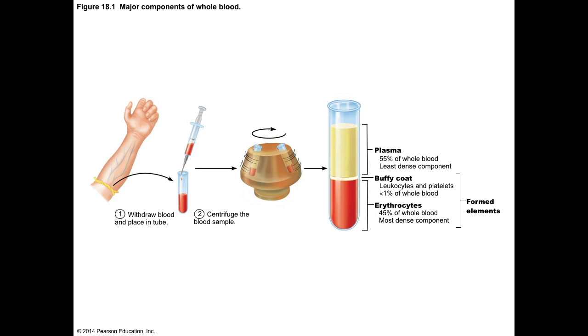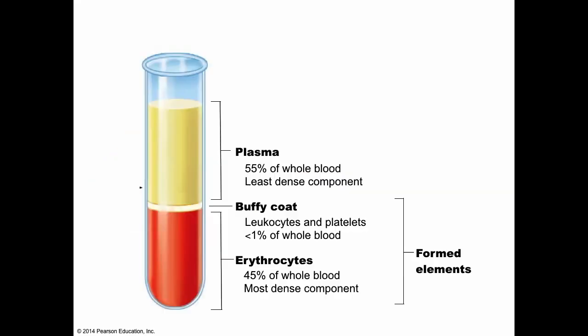Red blood cells, also called erythrocytes, make up almost half of the solid components, and their main function is to carry hemoglobin. Unlike nutrients that can be carried in the fluid, oxygen does not dissolve in water very well and so quickly binds to the hemoglobin molecules contained in the red blood cell. Each red blood cell houses about 280 million hemoglobins, and each hemoglobin carries four oxygen molecules — that's over a billion oxygen molecules per red blood cell.